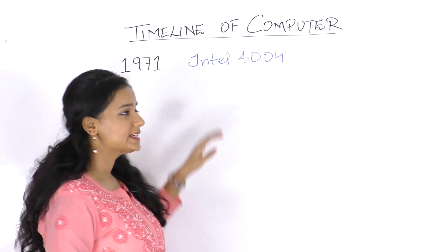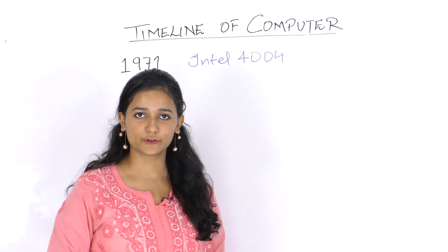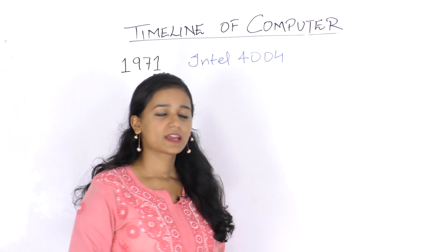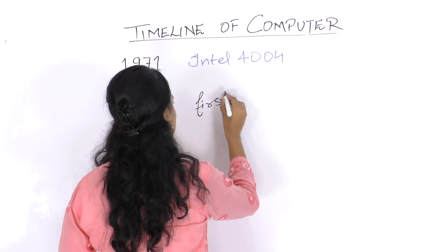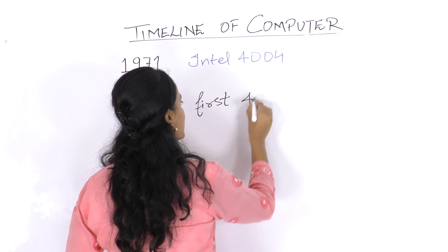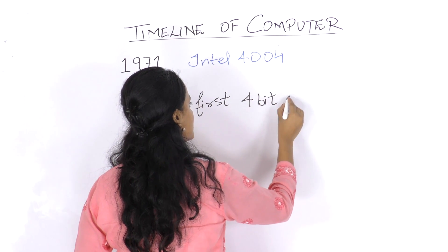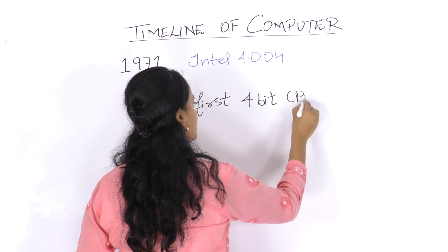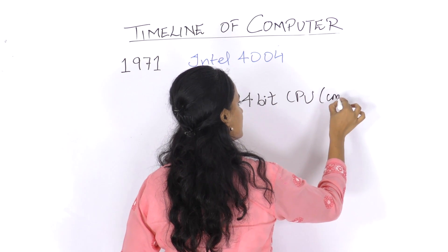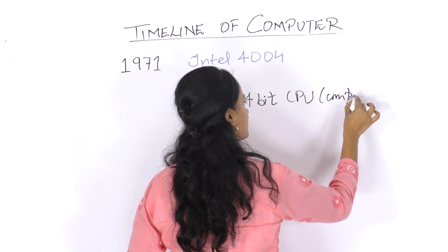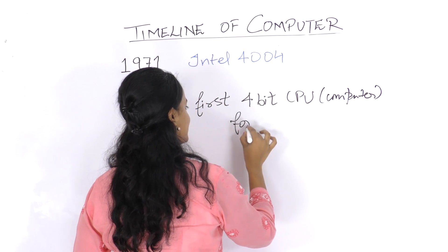In 1971, Intel released the Intel 4004, which was the first 4-bit CPU for commercial use.